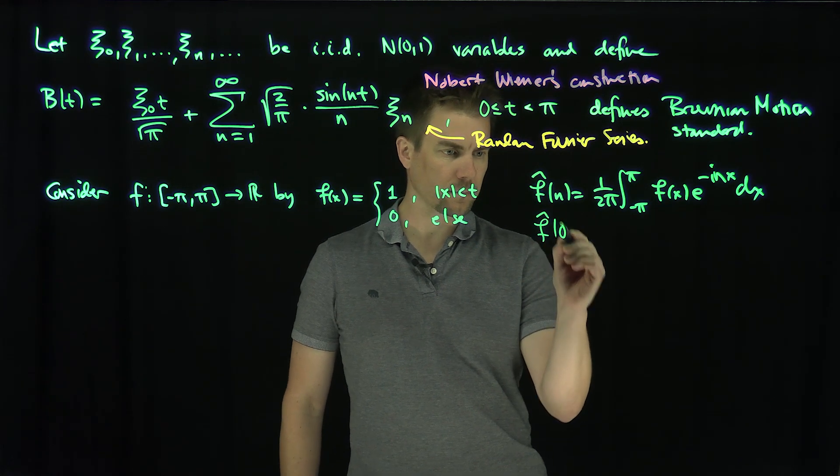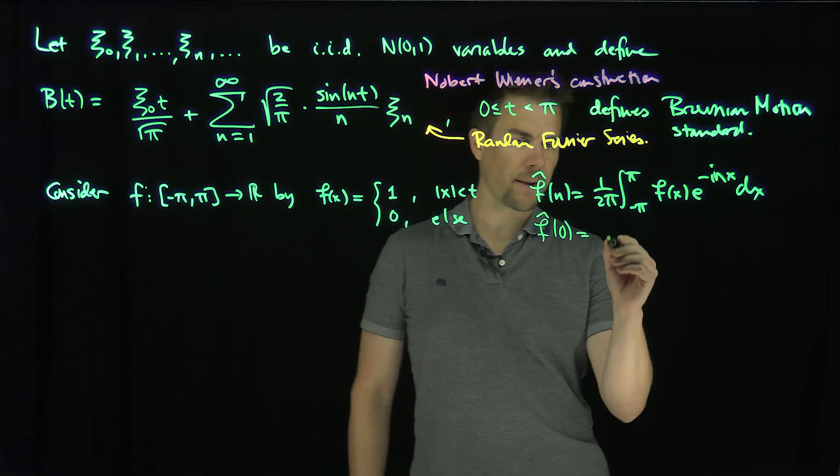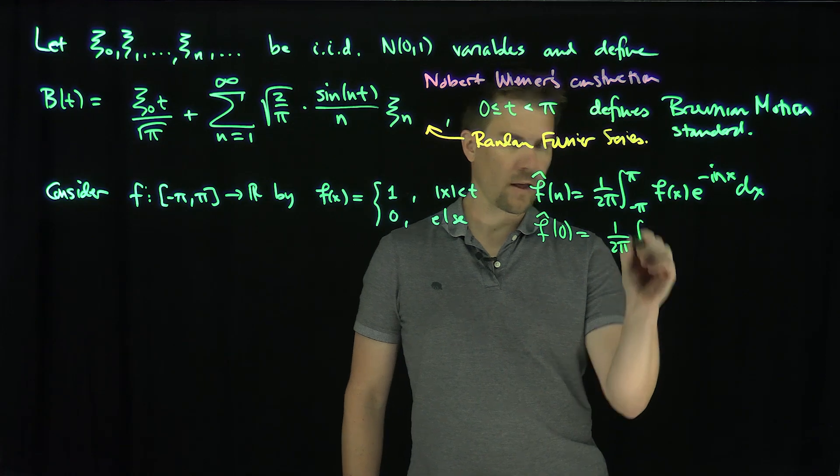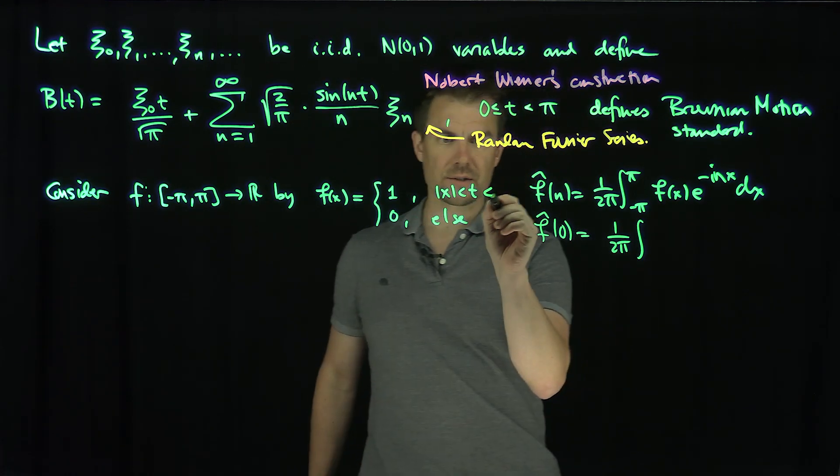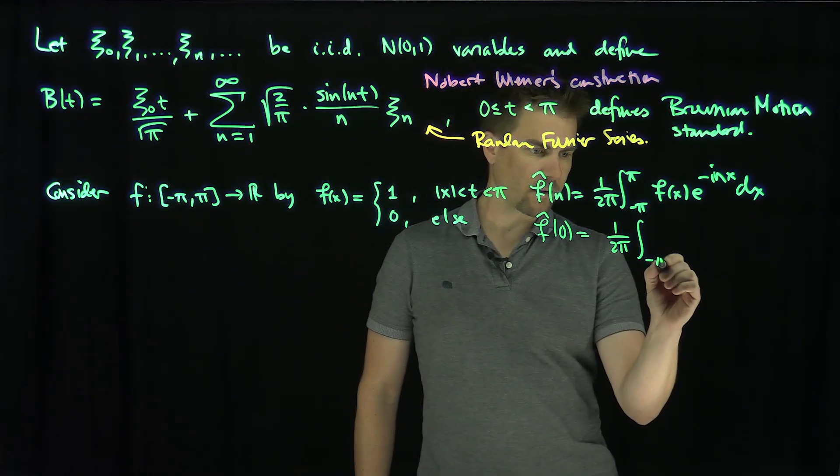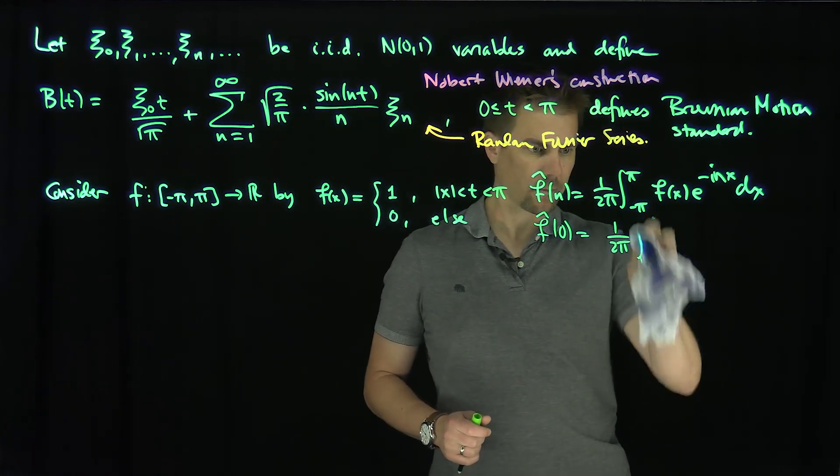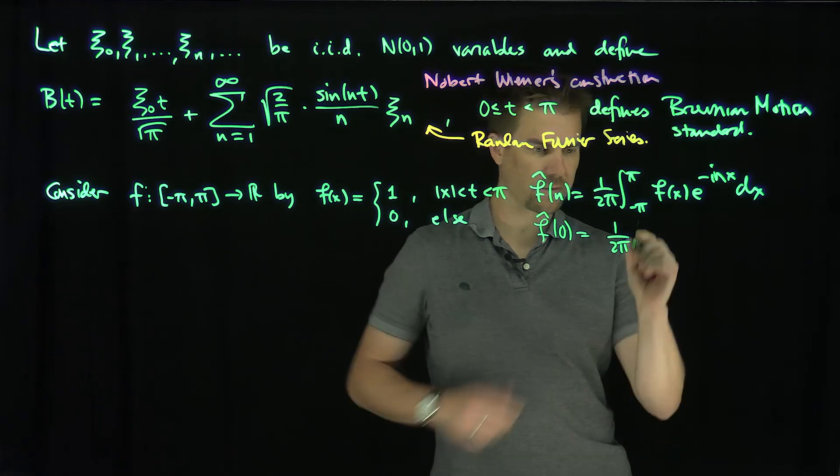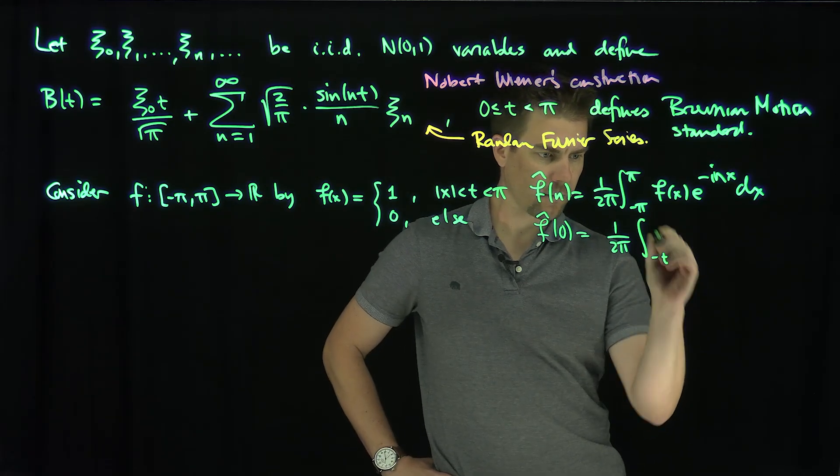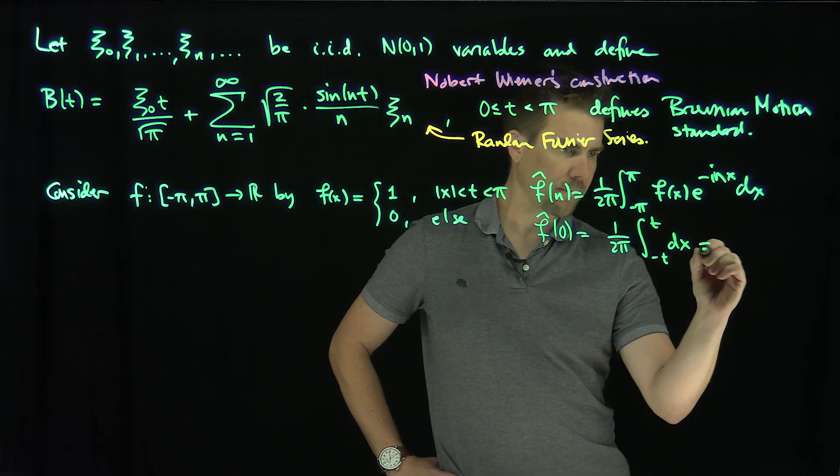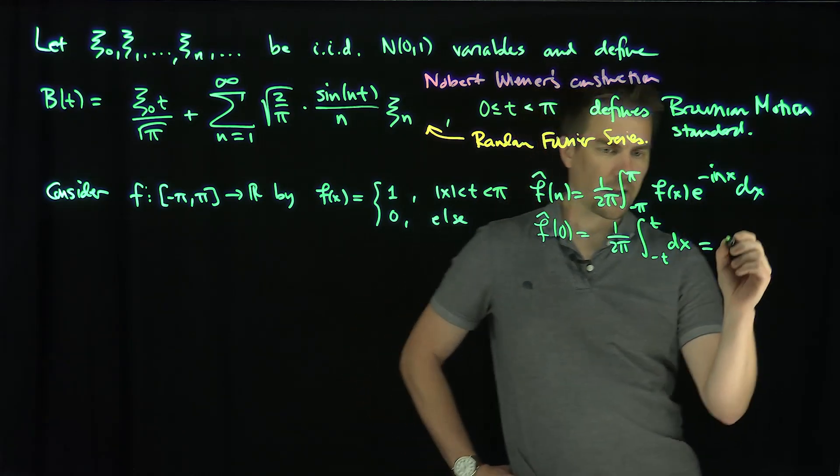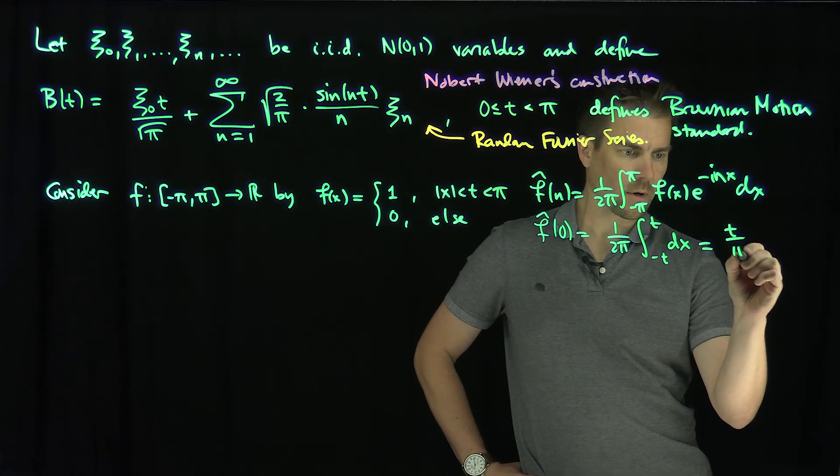And so if I consider this function over here, then what's f̂(0)? So f̂(0) is 1 over 2π, the integral where n is integrated from, t is less than, strictly less than π. Integrate from -π to π, but that's going to be -t to t rather, -t to t. Integrate from -t to t now, dx, because n is equal to 0, and this is going to be t over π.